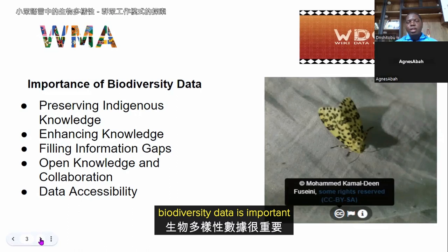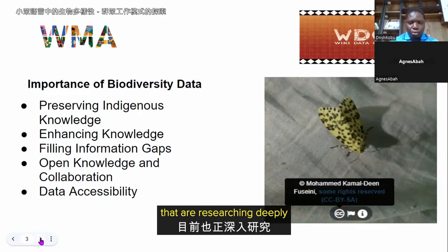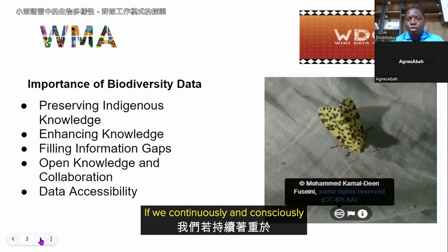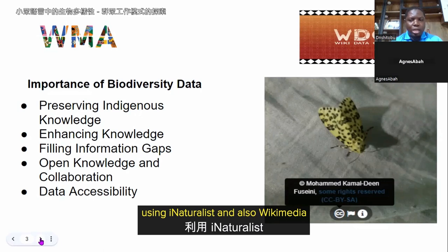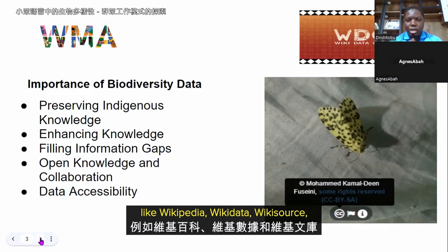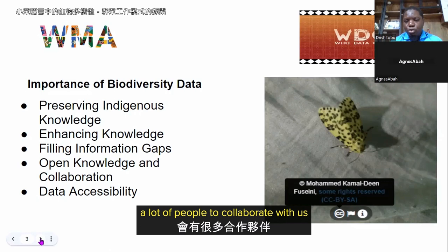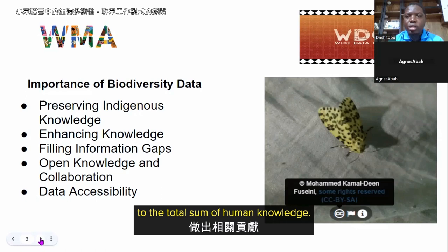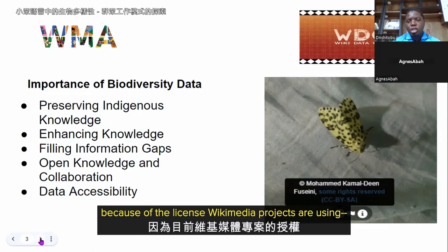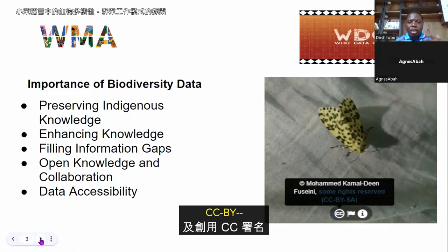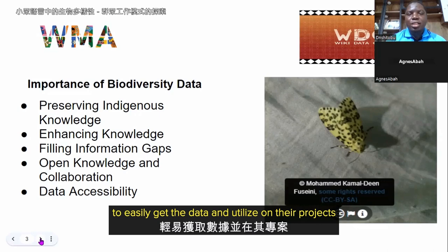Biodiversity data is also important because it gives us room for open knowledge and collaboration. There are many organizations researching deeply into biodiversity, and if we consciously digitize that data using iNaturalist and Wikimedia projects like Wikipedia, Wikidata, and Wikisource, we can get many people to collaborate with us. Because Wikimedia projects use CC Zero, CC BY licenses, it allows others who need this data to easily access and utilize it for their projects and research.